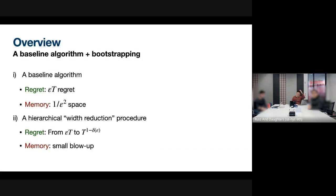The main algorithm has two parts. The first is a baseline algorithm that achieves slightly sublinear regret — epsilon·T regret in 1/epsilon² space. Think of epsilon as something like polylog(T), giving regret T/polylog and memory polylog. The second part is a weight reduction procedure that significantly boosts the regret guarantee without losing too much memory, applied recursively to get our final result. Most of the innovation comes from the first part.